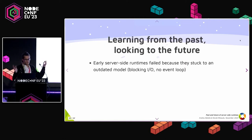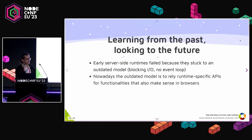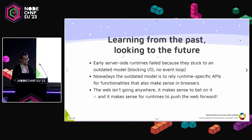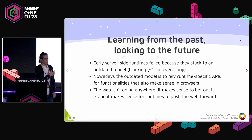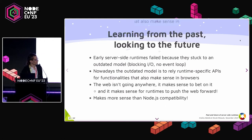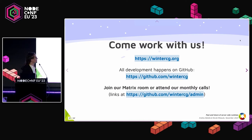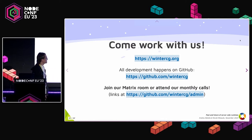In conclusion, early server-side runtimes failed because they stuck to an outdated model — blocking IO with no event loop. Nowadays, the outdated model is to rely on runtime-specific APIs for functionalities that also make sense in browsers. The web is not going anywhere, and it makes sense to bet on it — and for runtimes to push the web forward. Come work with us at wintercg.org. All the development happens on GitHub — join our Matrix room or our monthly calls.